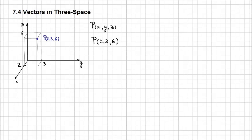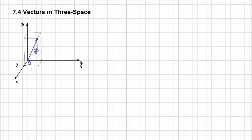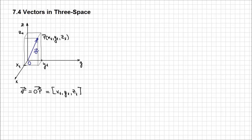Extending the knowledge you already have: the position vector in 3-space is the same as in 2-space. It starts at the origin and the endpoint is that point in space. The only difference is that we have introduced another coordinate. So, taking generically a point P of coordinates x1, y1, and z1, the vector v — the position vector OP from the origin to point P — in algebraic format is going to have a similar form as before for the 2-space, but with an extra component: x1, y1, and z1.